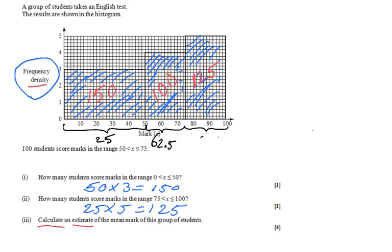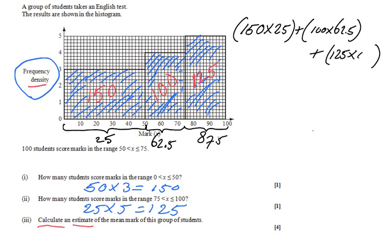Then you find the mean. So 150 times a score of 25 plus 100 times a score of 62.5, plus I'm going to continue there. I have 125 students who got a score of 87.5, and all of that divided by the frequency. How many scores in total are taken?